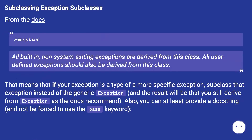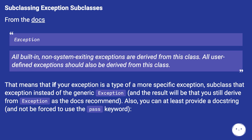Subclassing exceptions: from the docs, exceptional built-in non-system-exiting exceptions are derived from this class, and all user-defined exceptions should also be derived from this class. That means if your exception is a type of a more specific exception, subclass that exception instead of the generic exception, and the result will be that you still derive from exception as the docs recommend. Also, you can at least provide a docstring and not be forced to use the pass keyword.